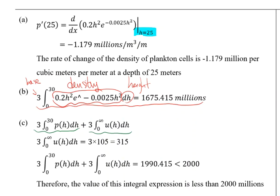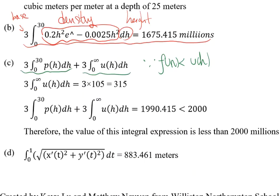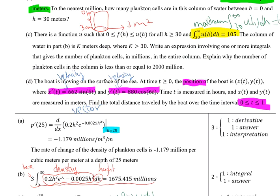Because the maximum value of f(h) is always less than or equal to u(h), the maximum value of 3 times the integral from 30 to infinity of u(h) dh is less than or equal to 315. Therefore, the maximum value of the number of plankton cells is 1990.415, which is less than 2000. We can conclude that the value of this integral expression, which gives the number of plankton cells in the entire column, is less than 2000 million.